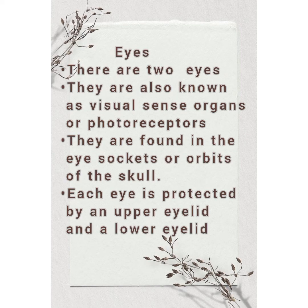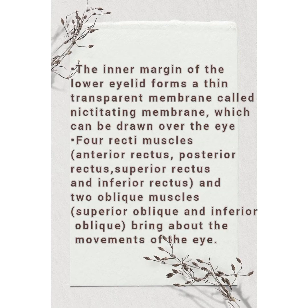Eyes: There are two eyes, also known as visual sense organs or photoreceptors. They are found in the eye sockets or orbits of the skull. Each eye is protected by an upper eyelid and a lower eyelid. The inner margin of the lower eyelid forms a thin transparent membrane called the nictitating membrane, which can be drawn over the eyes.